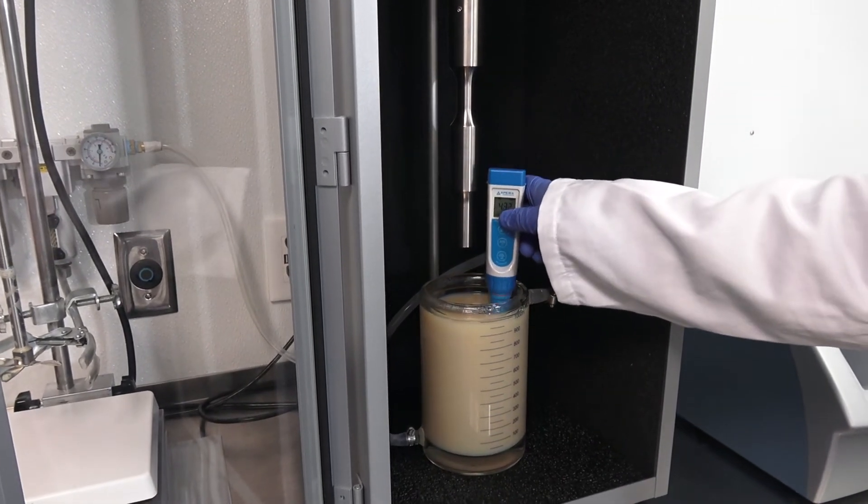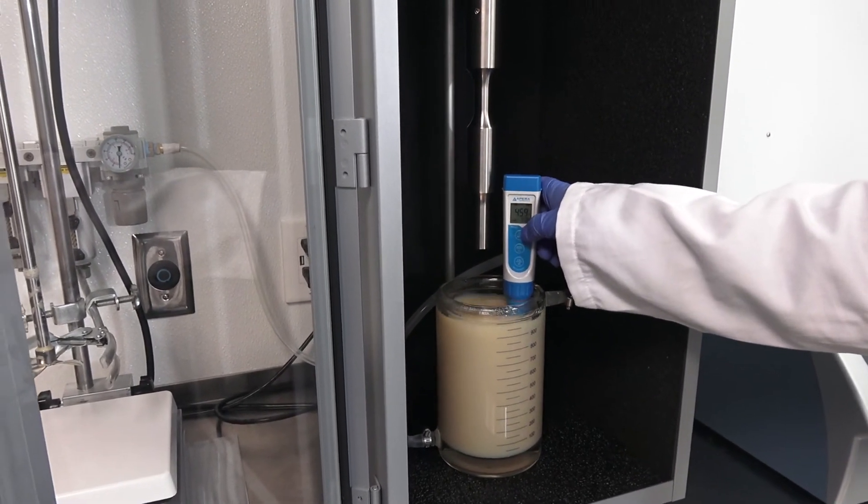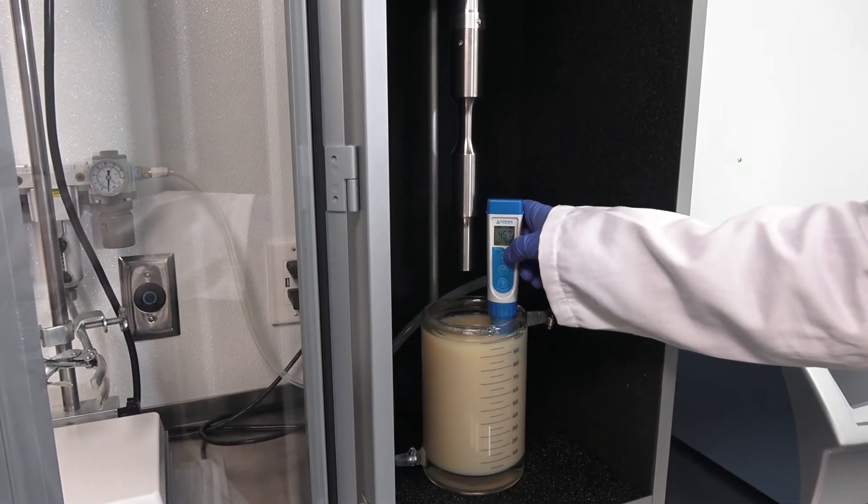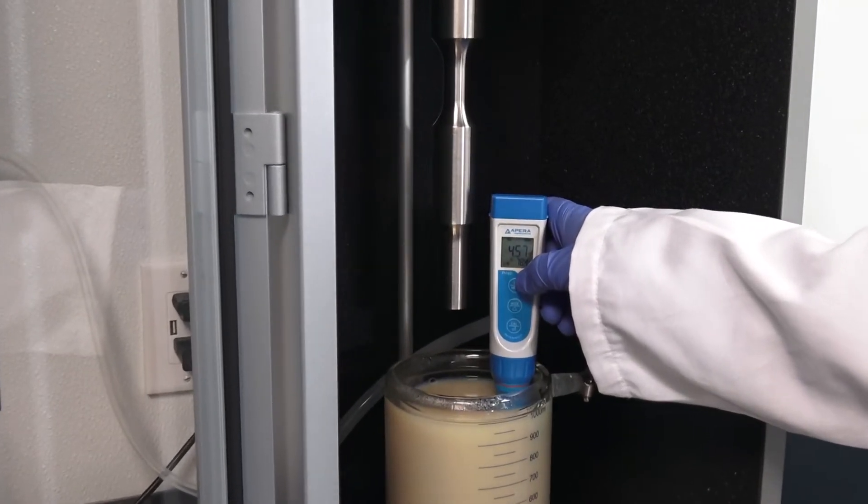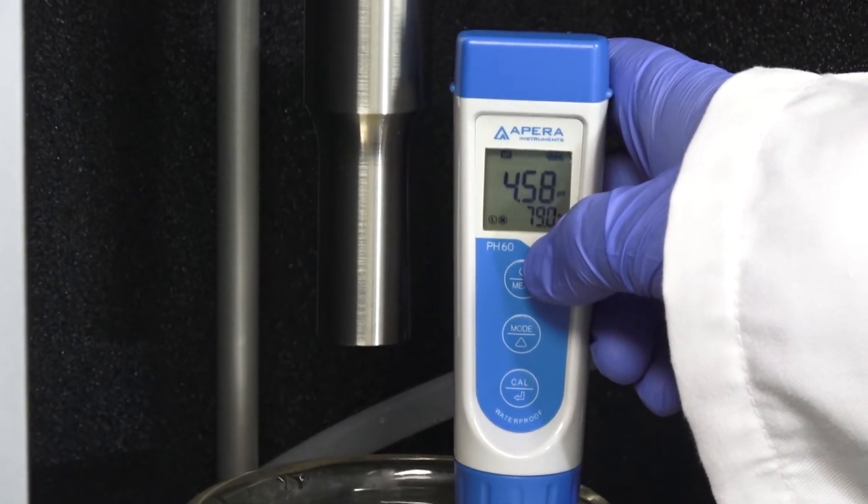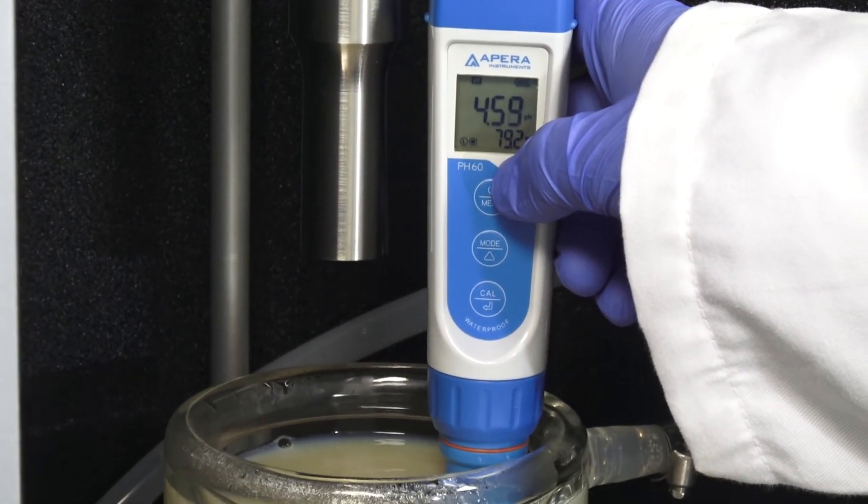At this point, you may choose to add preservative and acid to enhance the shelf life of the concentrated emulsion. We've added 0.15% potassium sorbate and used ascorbic acid to acidify the product to a pH below 4.6 to enhance stability.